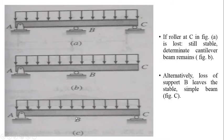Alternatively, if we remove support at B, figure C shows that the roller at B is removed, but still it results into a stable simple beam.